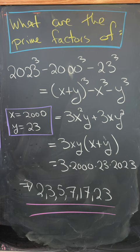You can find all of the prime factors of those pretty easily and get 2, 3, 5, 7, 17, and 23.